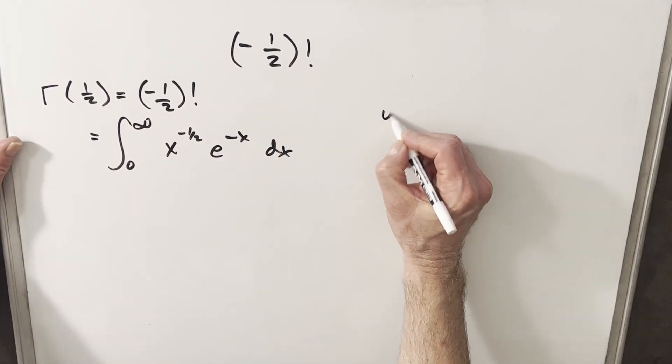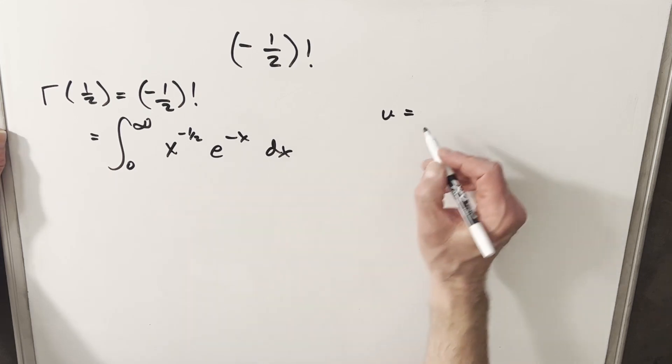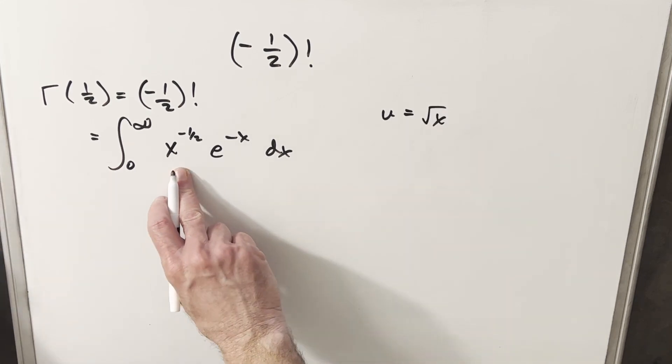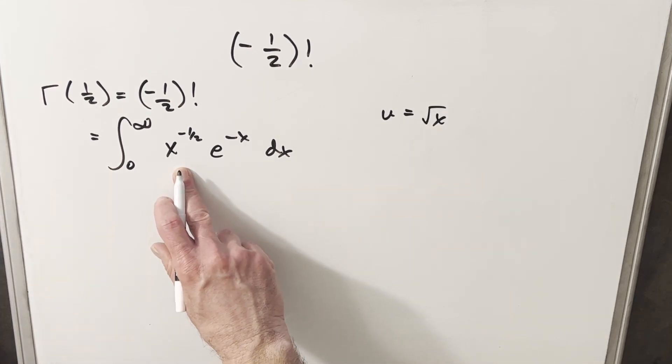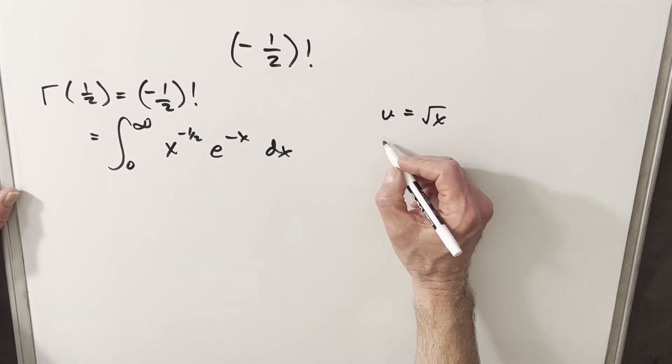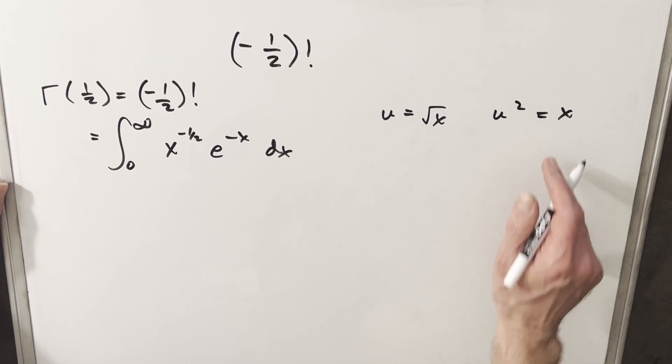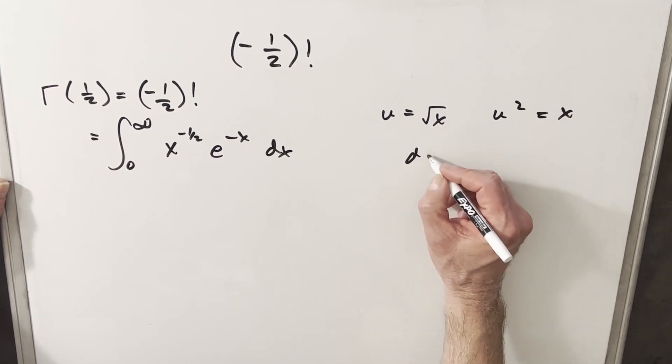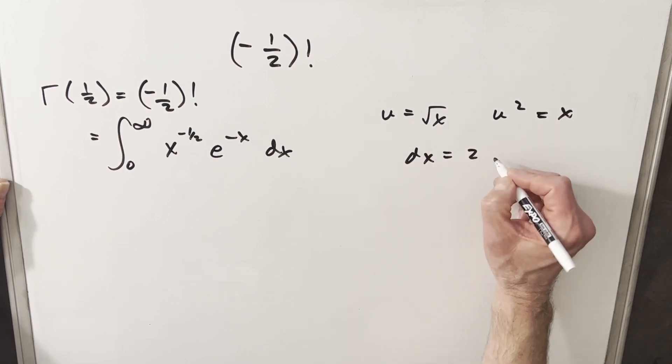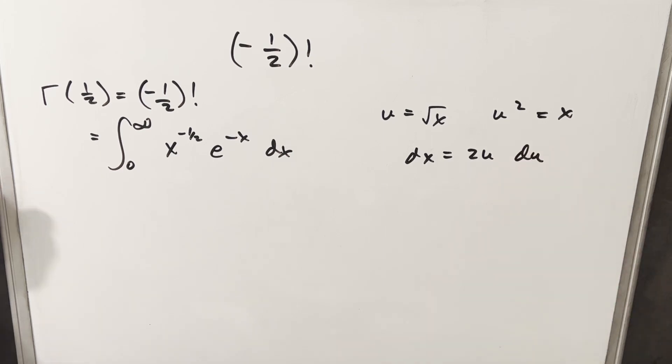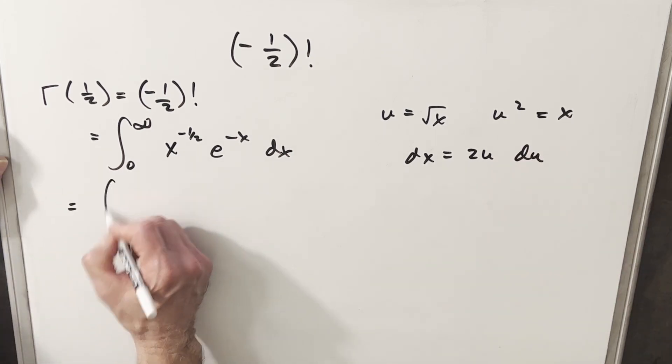So the way I want to approach this integral is I'm going to do a u substitution. I'm going to call my u square root of x just because we notice we have essentially one over square root of x here. And then noticing that u squared is going to be x, we'll take a derivative and we're going to have dx equals 2u du.